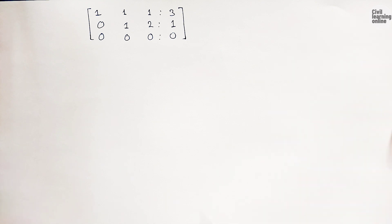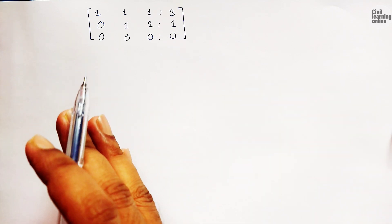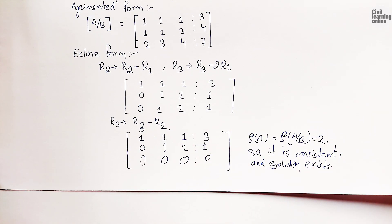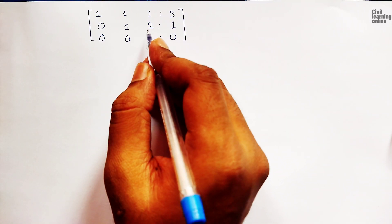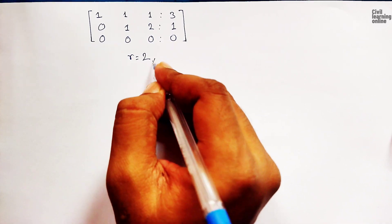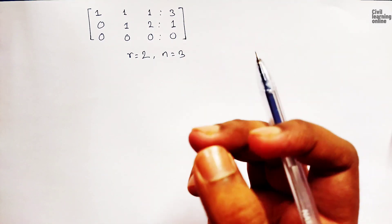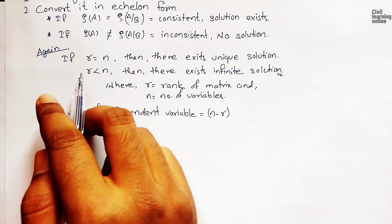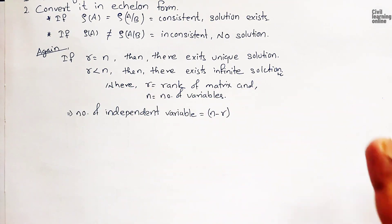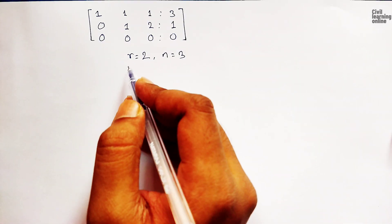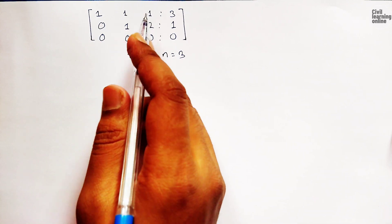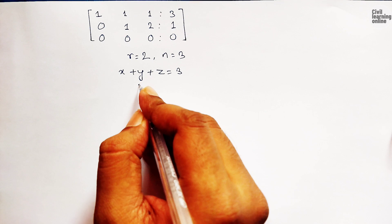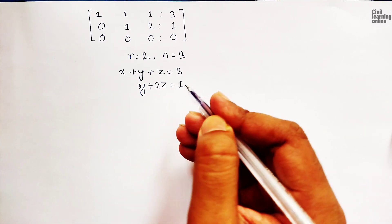The system is consistent. The rank is 2 while the number of variables is 3 (x, y, z). Since rank is less than number of variables, there exist infinite solutions. We convert the rows back to equations: equation 1 is x + y + z = 3, and equation 2 is y + 2z = 1.